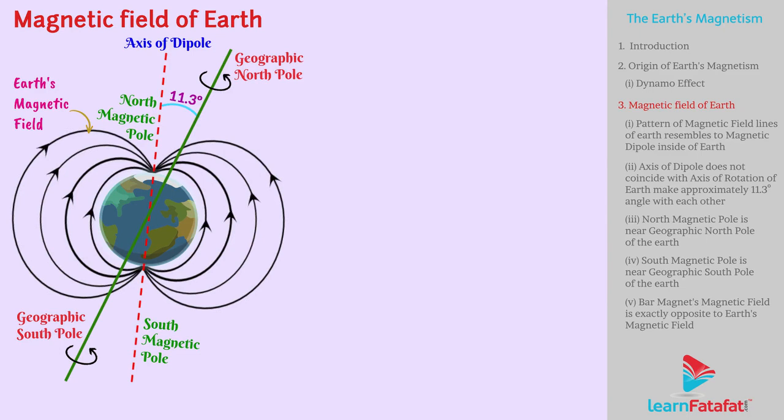Dear students, the pole near the geographic north pole of the Earth is called the North Magnetic Pole. Likewise, the pole near the geographic south pole is called the South Magnetic Pole.